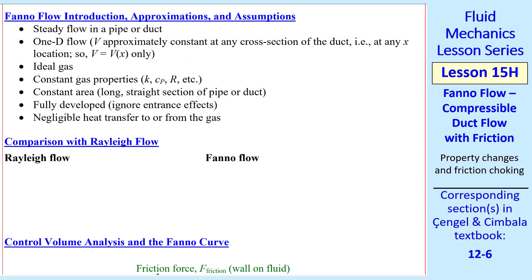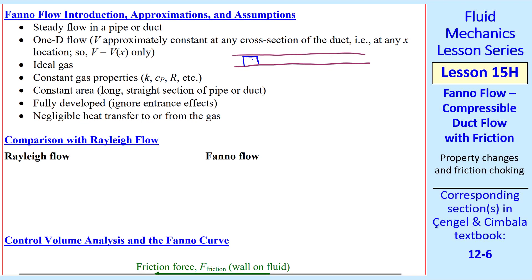By way of introduction, here are the approximations and assumptions we make. The flow is steady, one-dimensional. We have a long, straight section of duct, and at any x location, the average speed is v, but it's a function of x, where x is the downstream direction. So at some other location, v can change. Here it's accelerating.